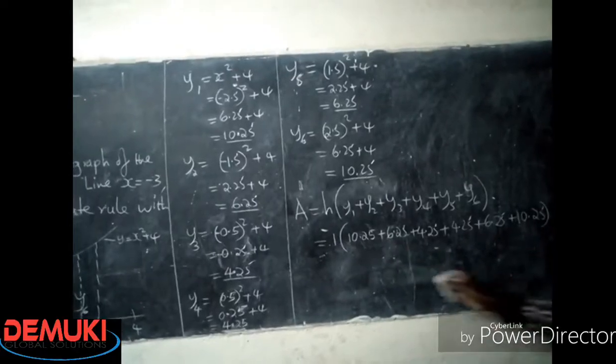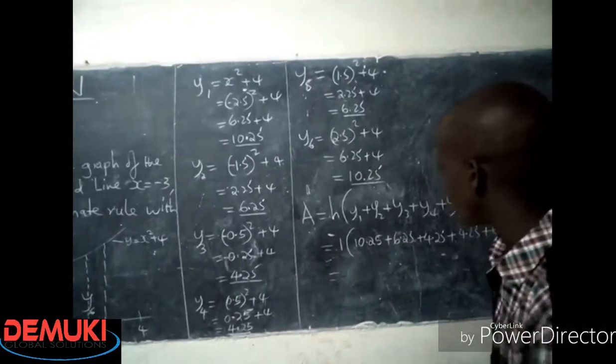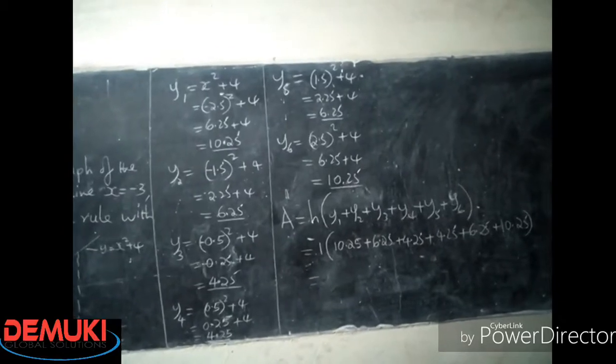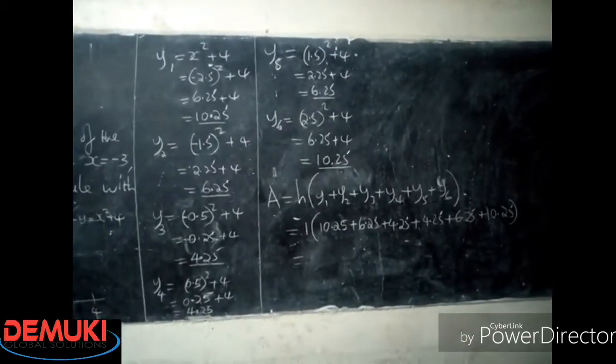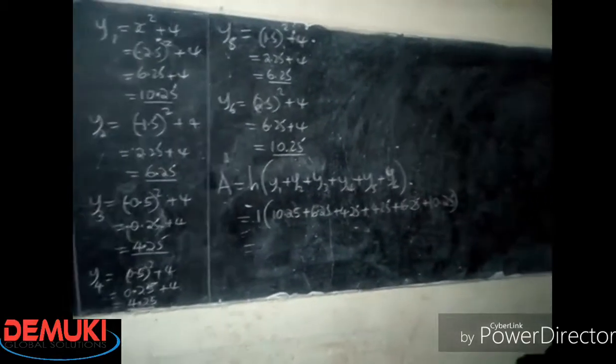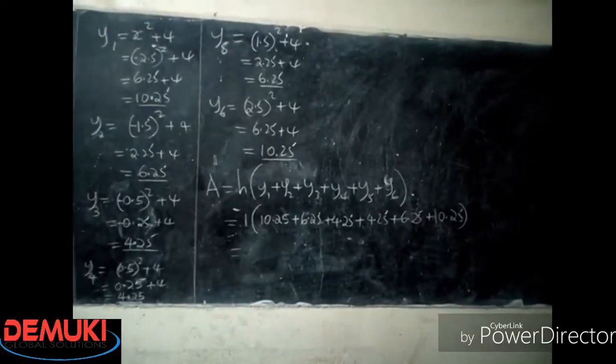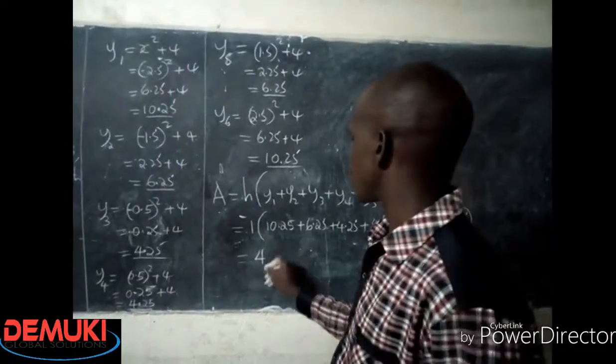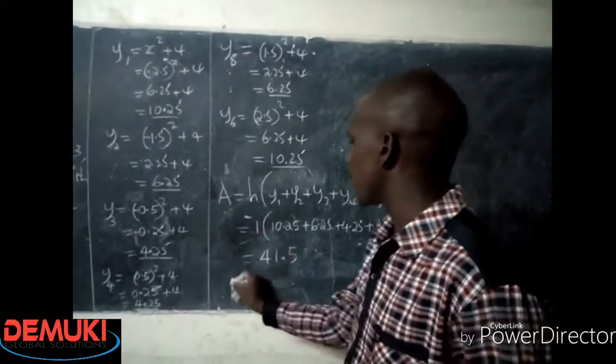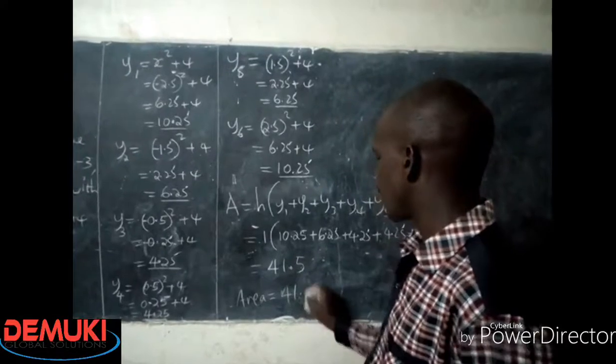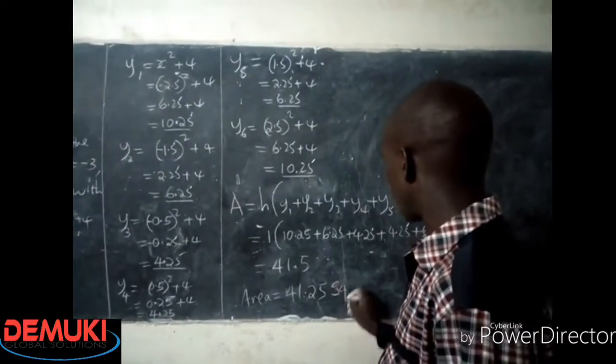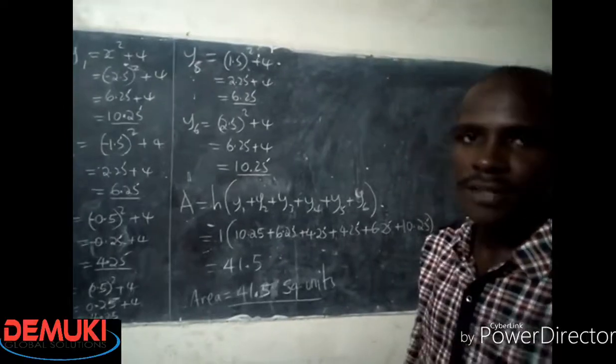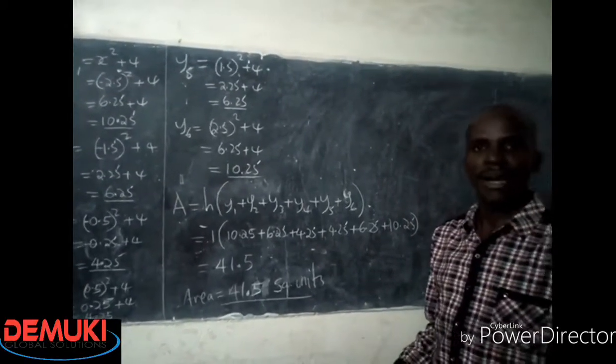This is now the mid ordinate, and this one should give me just my answer, which is 10.25 I'm adding 6.25, which I'm adding 4.25, I'm also adding 4.25, I'm adding again 6.25, I'm adding 10.25. So this gives me times 1, of course, 41.5. So the area becomes 41.5 square units. That is how you approach that problem. Thank you.